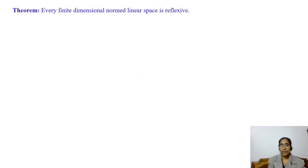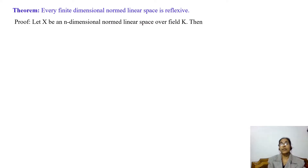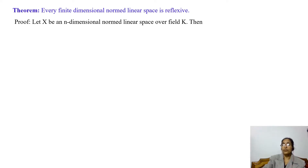The first theorem states that every finite-dimensional normed linear space is reflexive. Let us prove this theorem. Let x be an n-dimensional normed linear space over field k, where k is the field of real numbers or complex numbers. Then we find that dimension of x equals dimension of x* equals dimension of x** and this equals n.